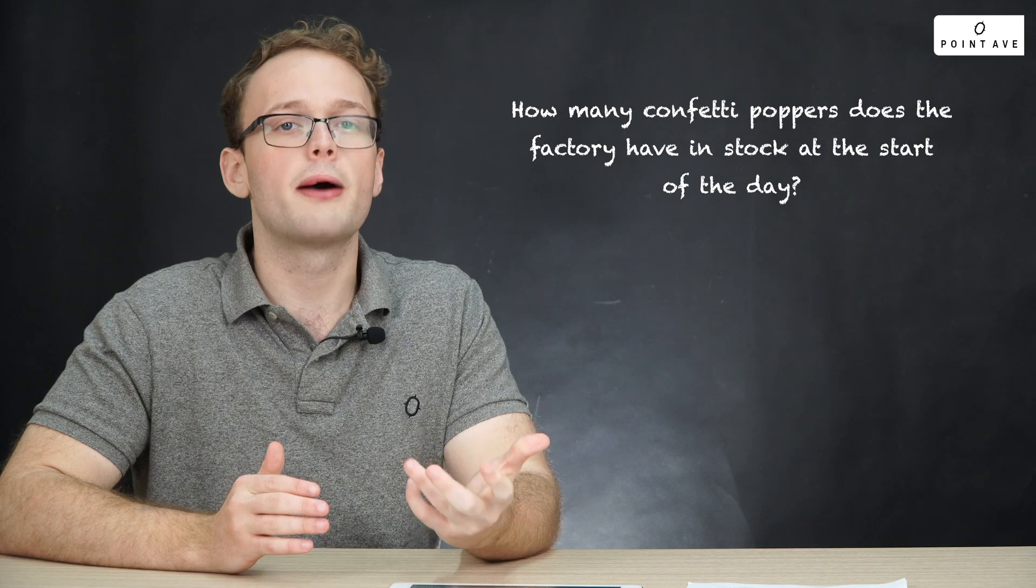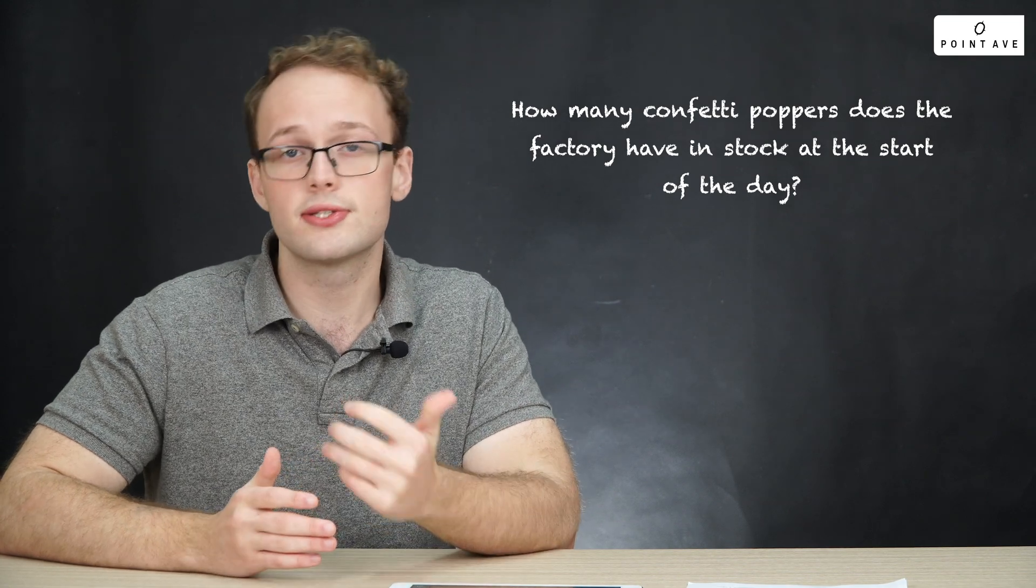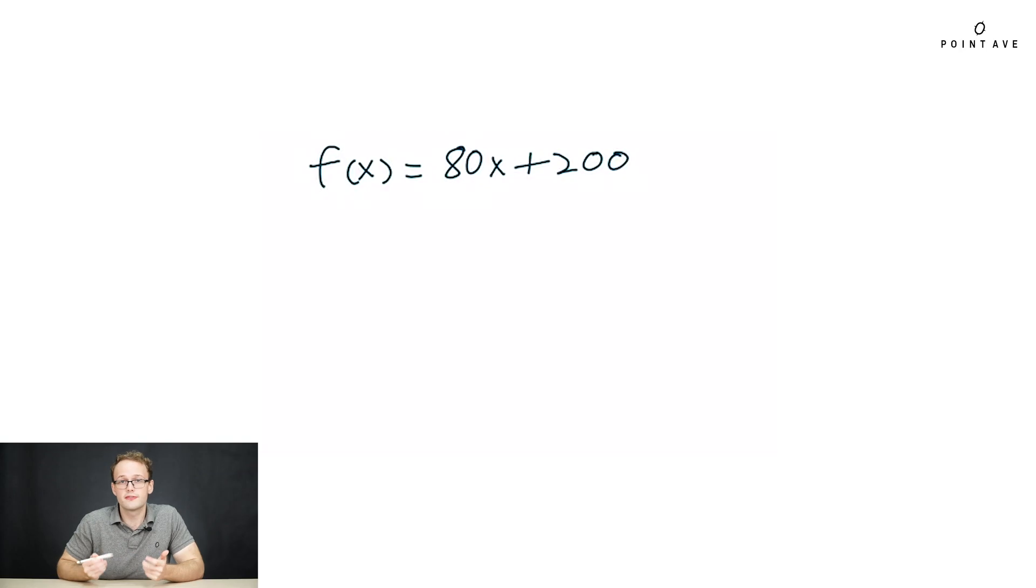So as I said before, there are three types of things we might be often asked about functions. The third is to interpret something about them. So suppose we were asked the question, how many confetti poppers does the factory have in stock at the start of the day? Looking at our function, we see that this constant 200 does not depend on x. So if we were to look at the case of giving no plastic into the factory, then we would still end up with 200 plastic confetti poppers. This tells us that we have to start off the day with 200 poppers in stock. And so the answer is 200.